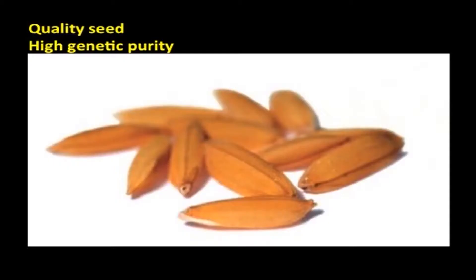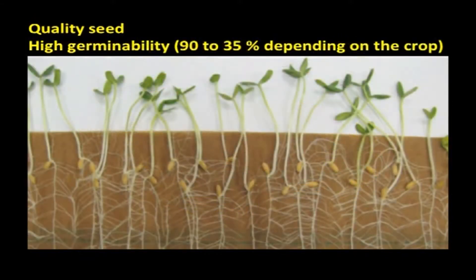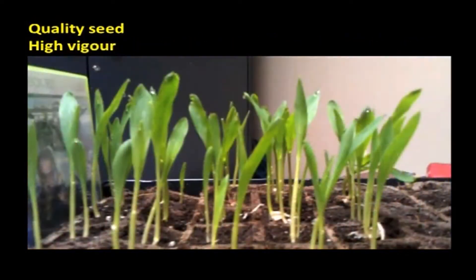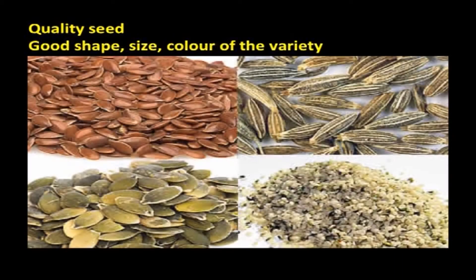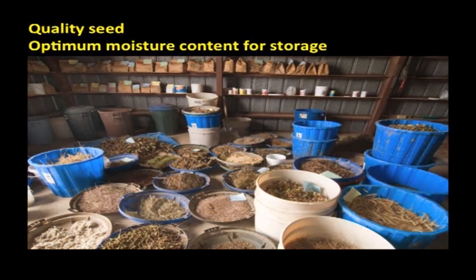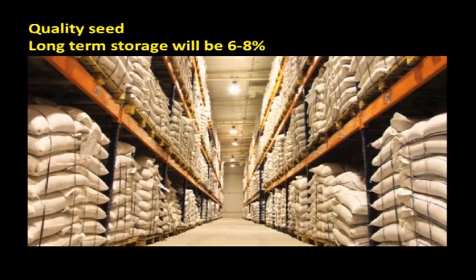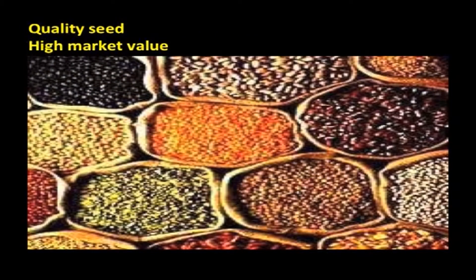To summarize, quality seeds should have high genetic purity, high pure seed percentage (physical purity), high germinability ranging from 85 to 90 percent depending on the crop, high vigor, higher field establishment, freedom from pests and diseases, good shape, size, and color according to the variety's specifications, high longevity or shelf life, and optimum moisture content of 6 to 8 percent for long-term storage and 10 to 13 percent for short-term storage, and finally high market value.